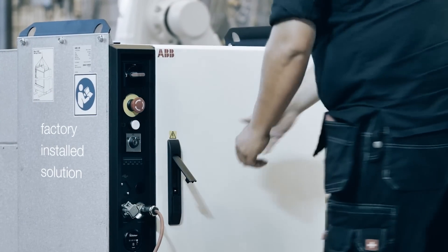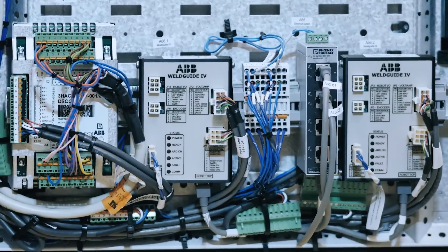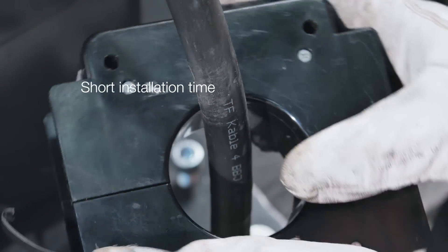WeldGuide 4 is a factory-installed solution with an easily mounted split-core sensor, providing a very short installation time.